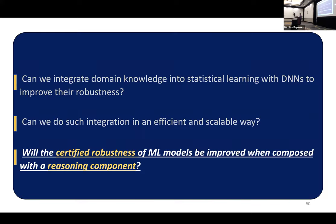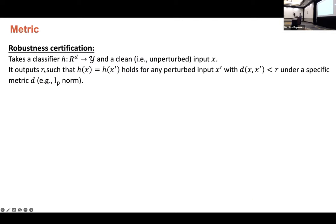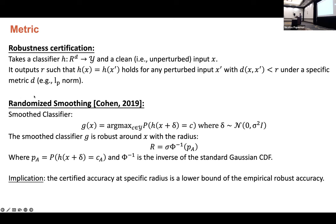So here comes the third question. We also certify the robustness of our pipeline will be improved when composed with such a reasoning component. And we will use some metrics to measure our performance. The first is certified accuracy. And here is a standard definition of the robustness certification. We are taking a classifier h and take a clean input x. And we want to output R such that h(x) equals h(x') for any perturbed input x' within some distance for some metrics.